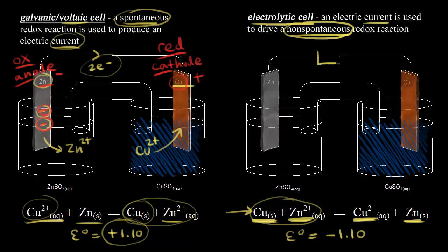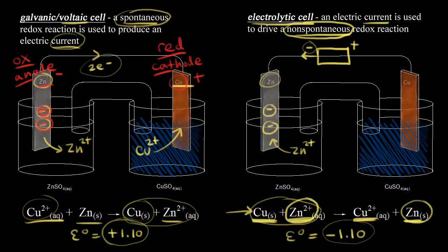We need a battery in our circuit. The negative terminal must be on the left side and the positive terminal on the right side. We need at least 1.10 volts — and in practice more than 1.10 volts — to force this reaction to occur. Electrons come out of the negative terminal of the battery and are delivered to the zinc electrode. With zinc two-plus ions in solution having the opportunity to be reduced, those zinc two-plus ions gain two electrons and turn into solid zinc, which forms on our zinc electrode.